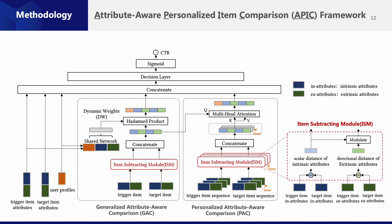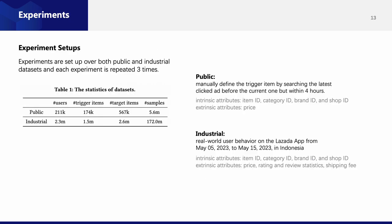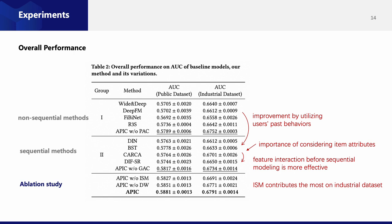This is the whole picture of our APIC algorithm. Experiments are set up over both public and industrial datasets, and each experiment is repeated three times. We consider two groups of baselines, including four non-sequential methods and four sequential methods, and we also do the ablation study. Detailed results of overall performance can be found in this table. The whole model of APIC achieves significant improvements over both the public and the industrial dataset.